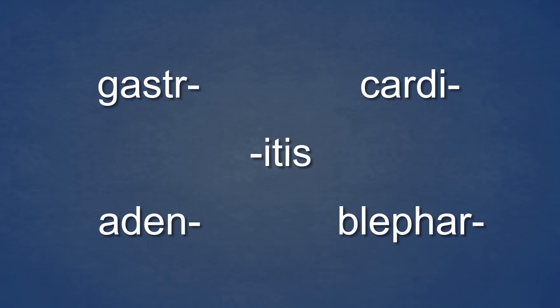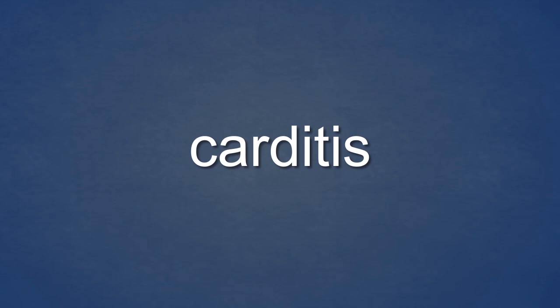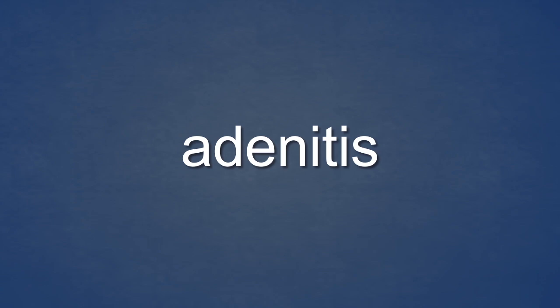Medical terms are made up of combinations of elements like these. For example, here is the term gastritis. Medical terms are typically interpreted from right to left. Gastritis, from right to left: inflammation of the stomach. Carditis, from right to left: inflammation of the heart. Adenitis, right to left: inflammation of a gland or glands.